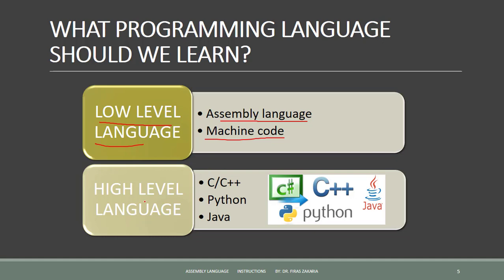Examples of high-level languages are C, C++, Java, and Python. Machine language is the first generation — it's based on zeros and ones. Assembly languages are second generation and are based on special codes. High-level languages are third generation.